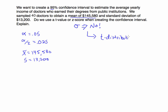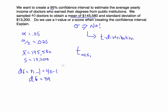We're going to use the student t-distribution, which means we have to find a t-value. We're looking for a t-value with 0.025 in each tail, but that's not the only thing we need. We also need the degrees of freedom. To find degrees of freedom, we take our sample size n and subtract 1. So 40 minus 1 gives us 39 degrees of freedom. We need a t-value with 0.025 in each tail and 39 degrees of freedom.